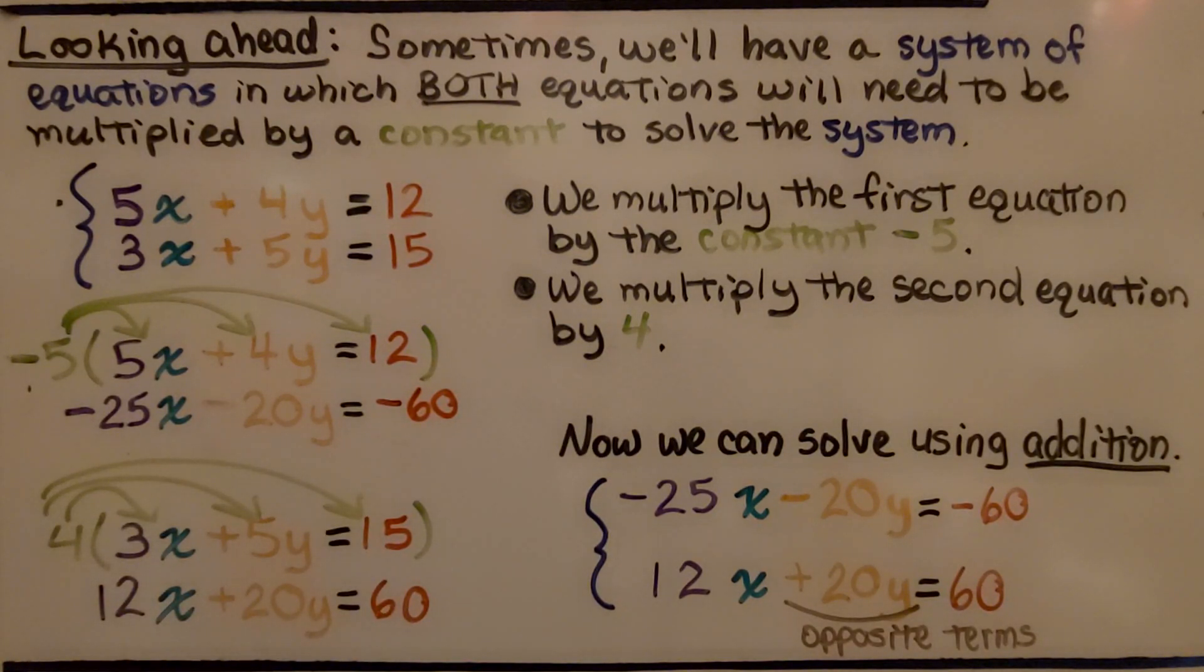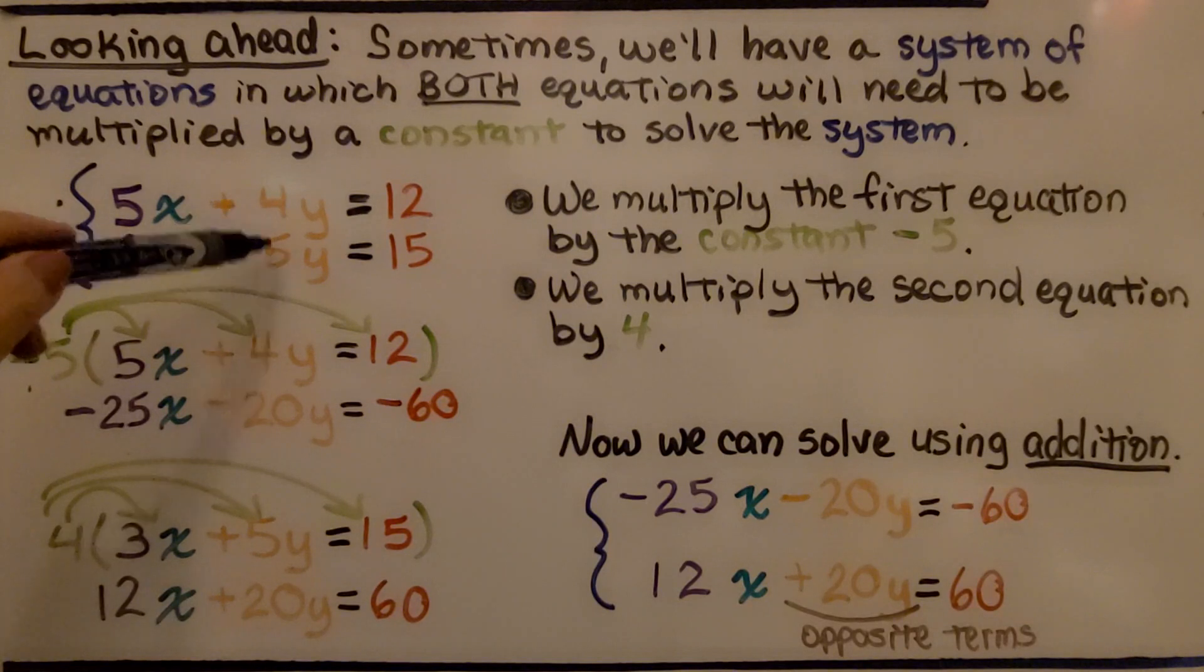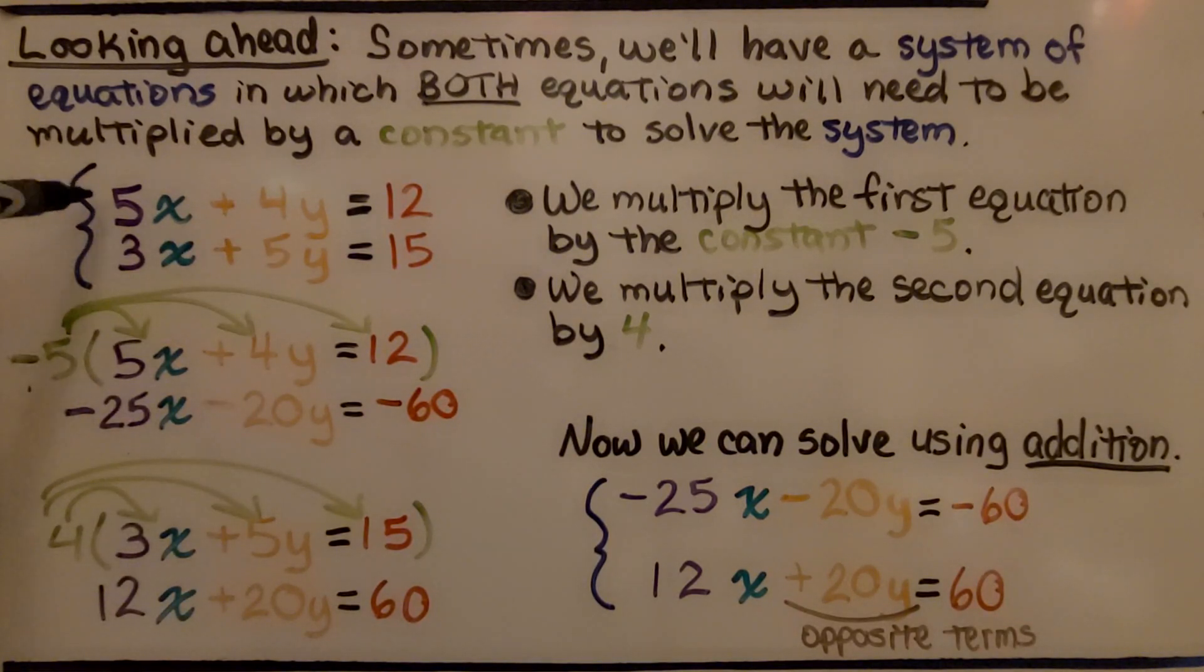Now we can solve using addition because our system is having opposite terms of minus 20y and plus 20y. Look at that. Now if you're really good, you can copy this and see if you can solve this equation for its x and y values. Just keep in mind, sometimes you might have to multiply both equations by a number that is a multiple of one of these. 20 is a multiple of four and five. We could have done negative 3 here and 5 here because 15 is a multiple of five and three.